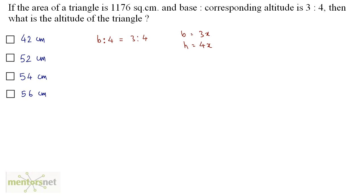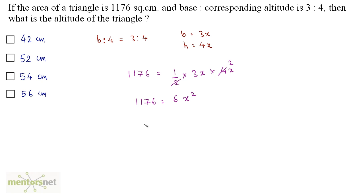The area of this triangle is 1176, which equals half into base into height — half into 3x into 4x. Two times 2 is 4, so 1176 equals 6x squared. Therefore x squared equals 1176 divided by 6, which gives 196. So x equals the square root of 196, and that is 14.